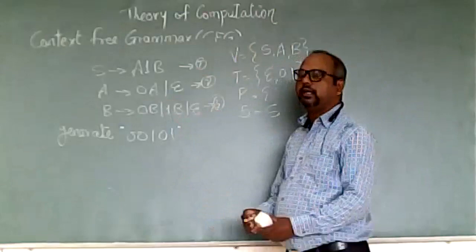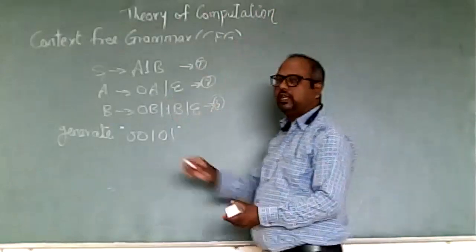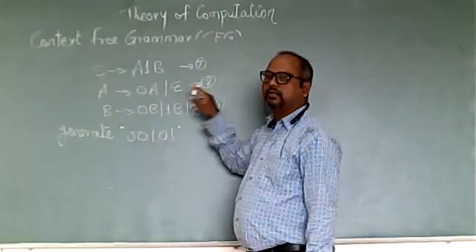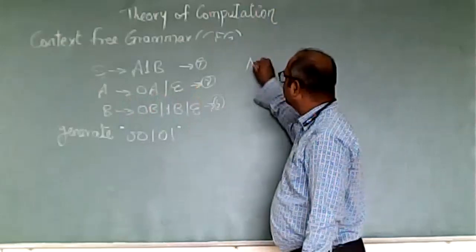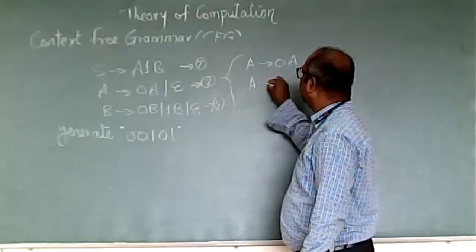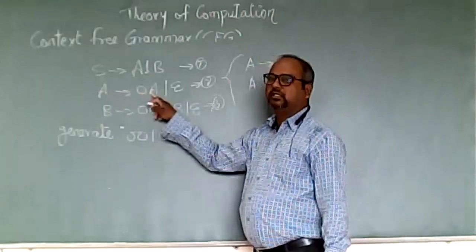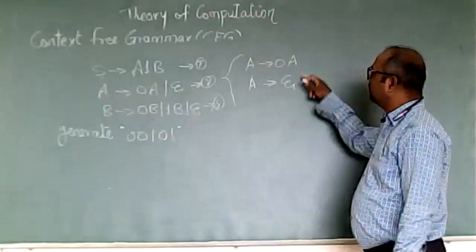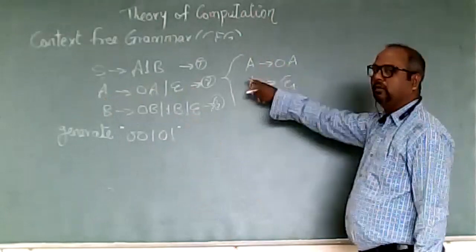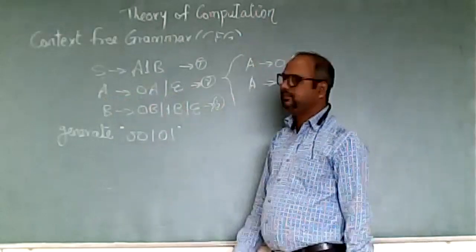Now we'll try to understand how to write the productions. Here we have A produces 0A or epsilon. This production can actually be written as two separate productions: A produces 0A, and A produces epsilon. So these are the two actual productions. Because they belong to the same variable A, we write them on a single line using the 'or' bar.